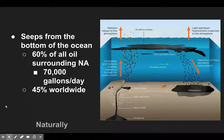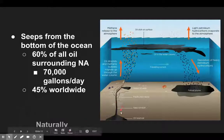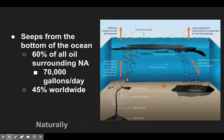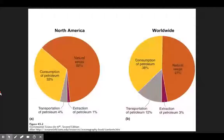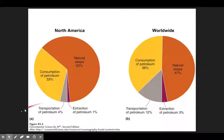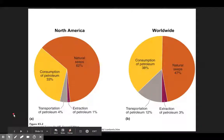Believe it or not, most of the oil that ends up in our ocean actually happens naturally. There are small fissures or cracks in the ocean floor where oil reserves leak out. Looking at the chart, natural seeps — both off the coast of North America and worldwide — are actually the main reason for oil contamination in the ocean. So natural seeps, combined with what humans are adding, gives you an idea of how much oil is entering the ocean and where it's coming from.